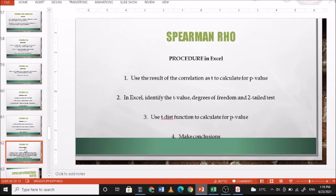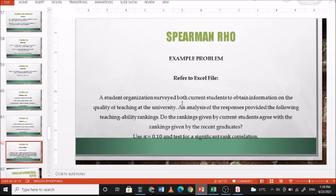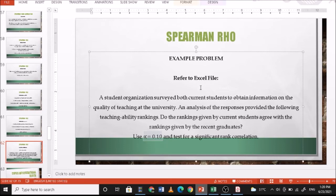Let's have this problem: A student organization surveyed both current students to obtain information on the quality of teaching at the university. An analysis of responses provided the following teaching ability rankings. Do the rankings given by the current students agree with the rankings given by the recent graduates? Use alpha equals 0.10 and test for significant rank correlation. You are going to analyze ranking of teaching abilities.